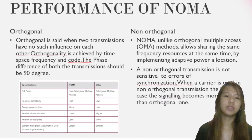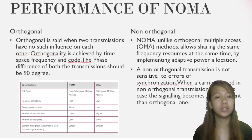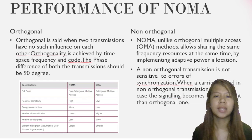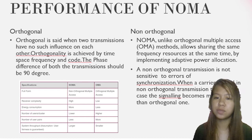Now, the performance of NOMA — comparing or contrasting orthogonal and non-orthogonal. Orthogonal is when two transmissions have no influence on each other. Orthogonality is achieved by time, space, frequency, and code. The phase difference of both transmissions should be 90 degrees.